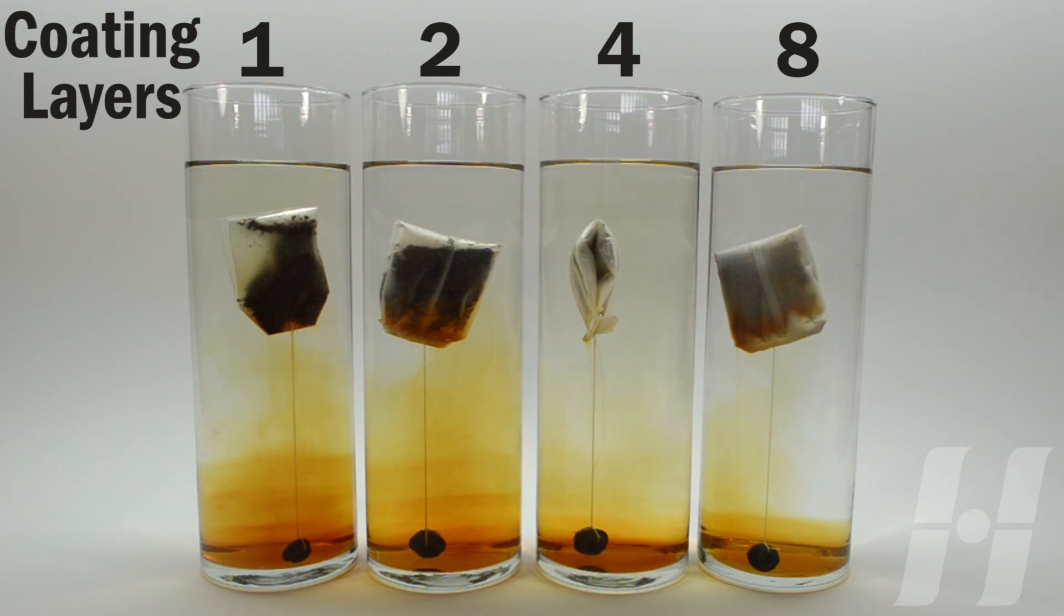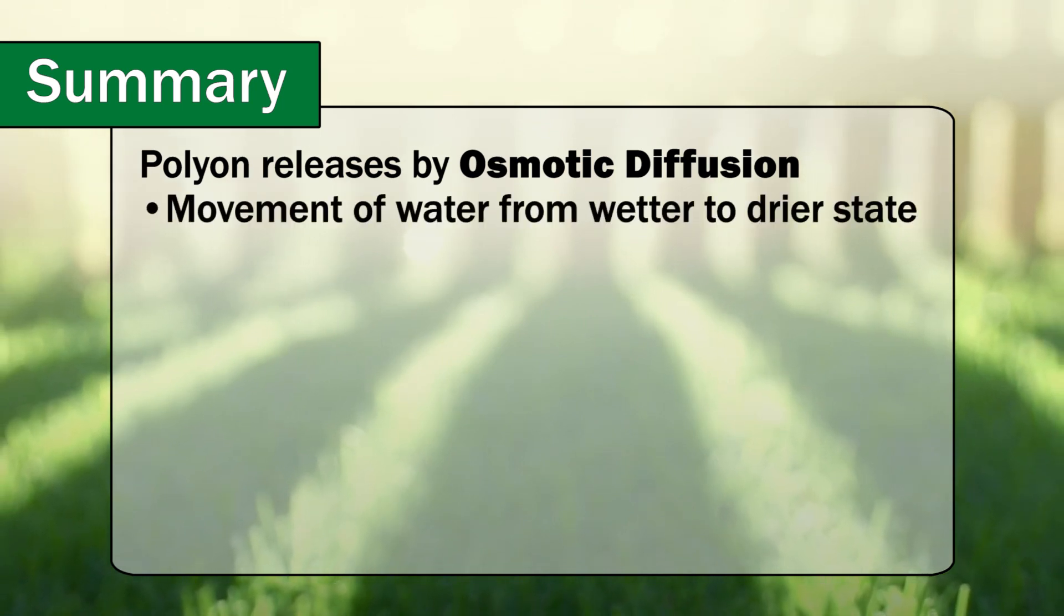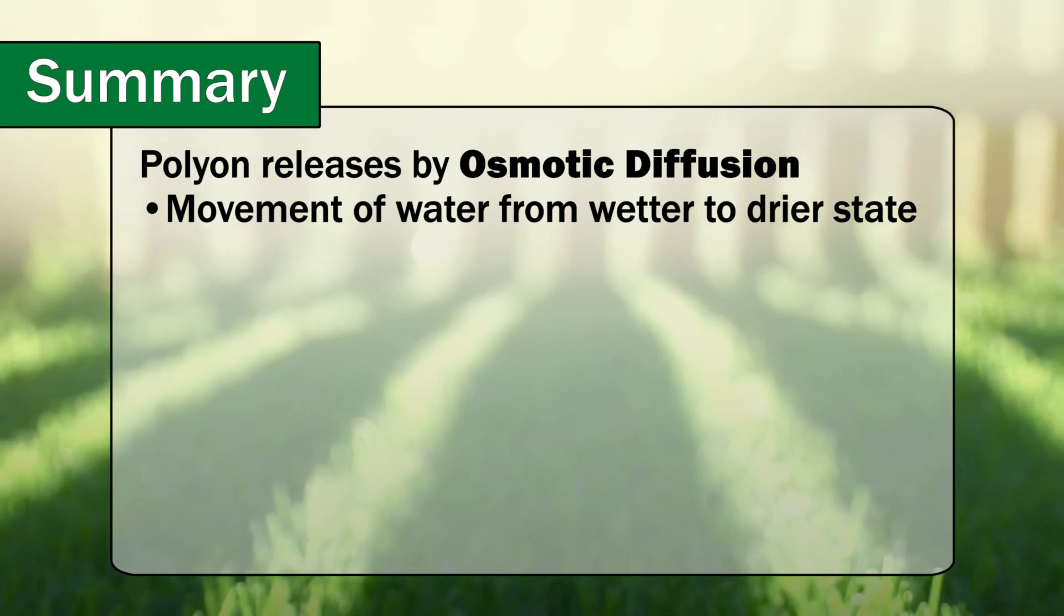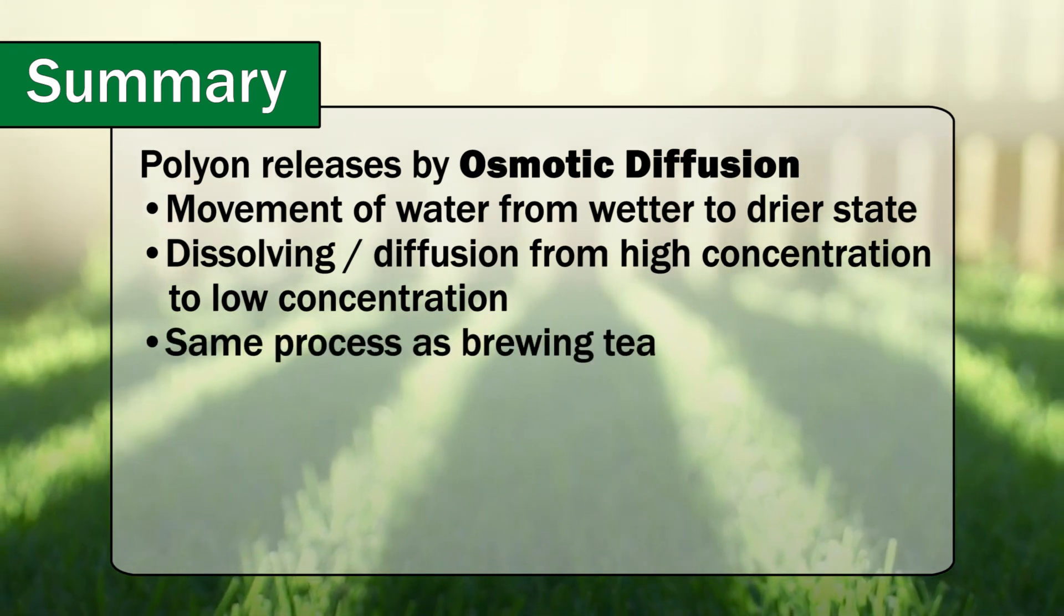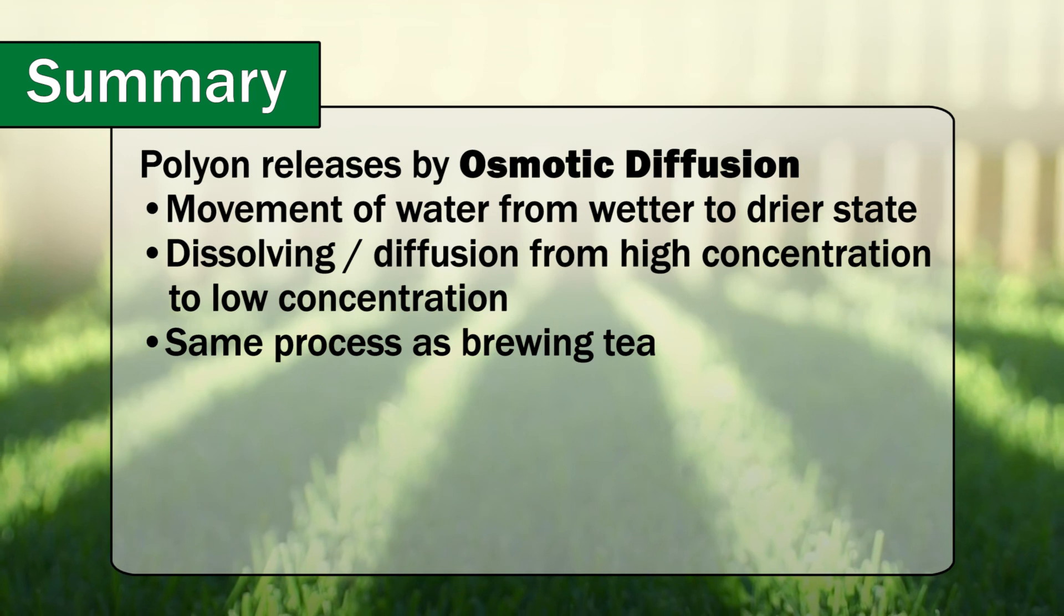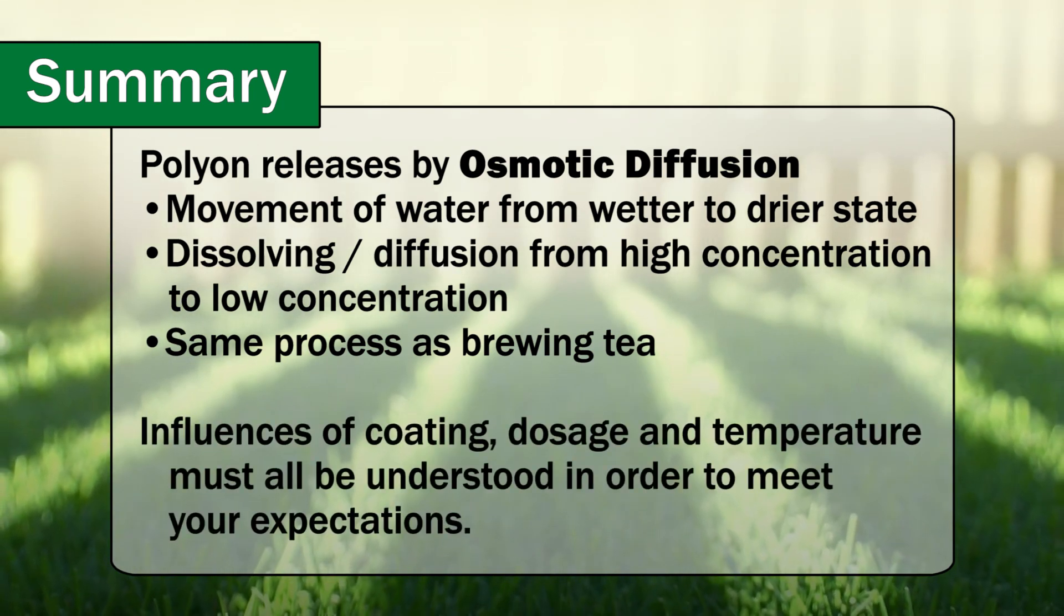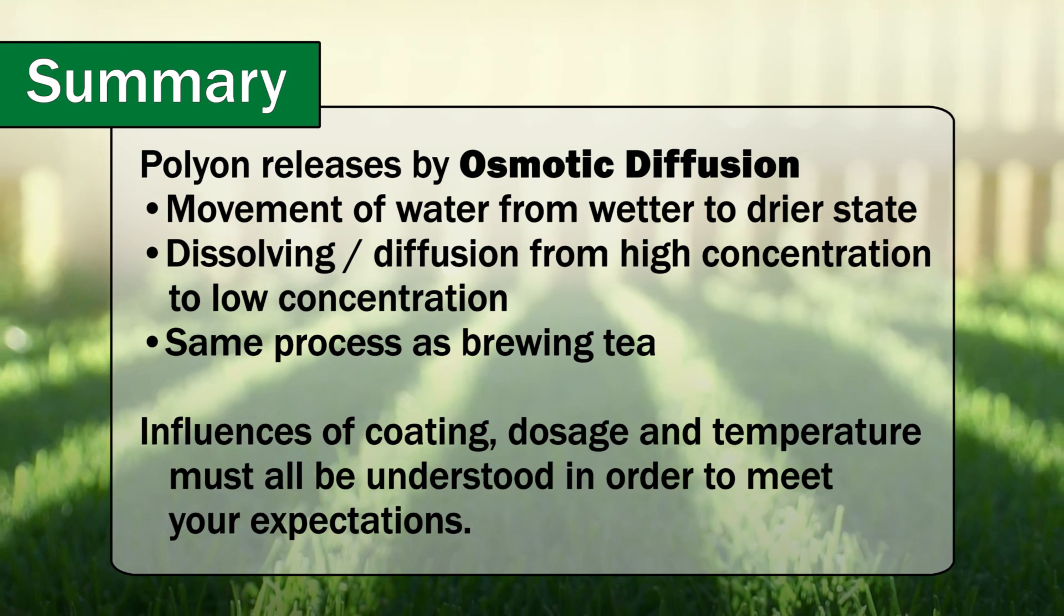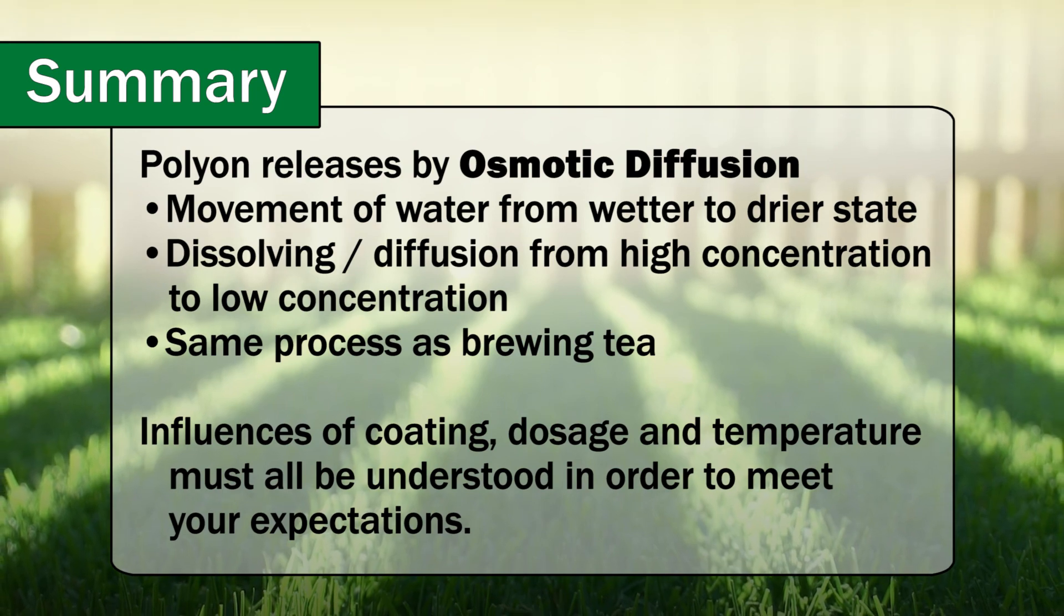To summarize, Polyon releases by a process called osmotic diffusion. That process involves the movement of water from a wetter state into a drier state, the dissolving of that substrate, and then the diffusion of that substrate back across from a high concentration to a low concentration, the exact same process whereby we brew tea. The influences of coating and dosage and temperature must all be understood in order to provide you with the appropriate material to meet your expectations.